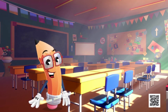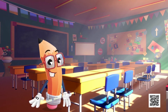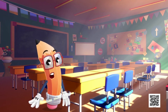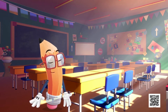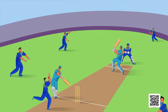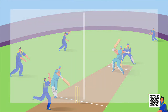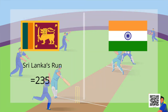You all already know about addition and subtraction, right? So dear children, what if we talk about some games now? What is your favorite game? Most of you, like me, like to play cricket. So dear children, look here — in a cricket match, Sri Lanka made 235 runs and India made 123 runs.